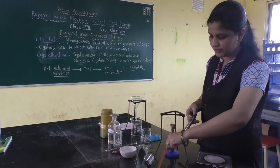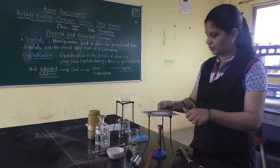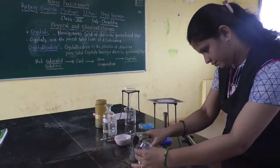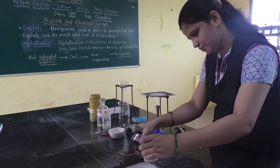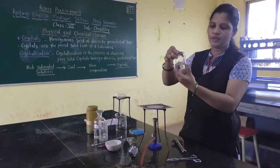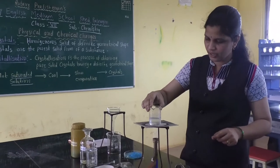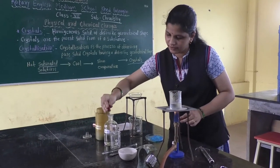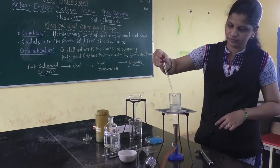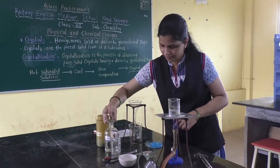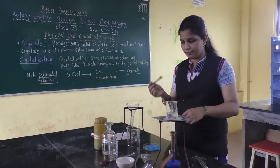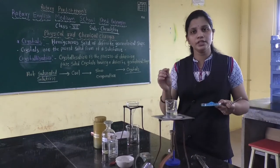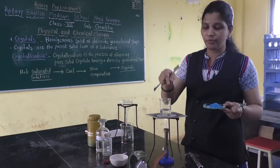So now we will perform the activity. In this beaker we have to take 50 ml of water — see here the marks are given, 50 ml. Then add 2 to 3 drops of dilute sulfuric acid using a dropper. And now with the help of a spatula we will add this copper sulfate powder into this water. This water is the solvent and this copper sulfate is the solute, because we are going to add it into the water.